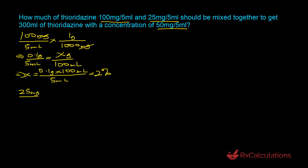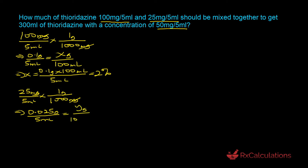We do the same for 25 milligrams per 5 milliliters. Converting milligrams to grams gives us 0.025 grams in 5 milliliters. Setting up the proportion, y equals 0.025 grams times 100 milliliters divided by 5 milliliters, which gives us 0.5 percent. So the 100 milligrams per 5 ml is the higher strength at 2 percent, and the 25 milligrams per 5 ml is the lower strength at 0.5 percent.